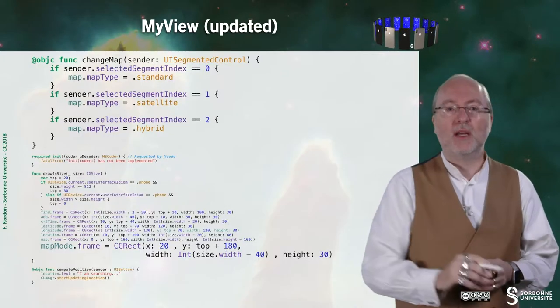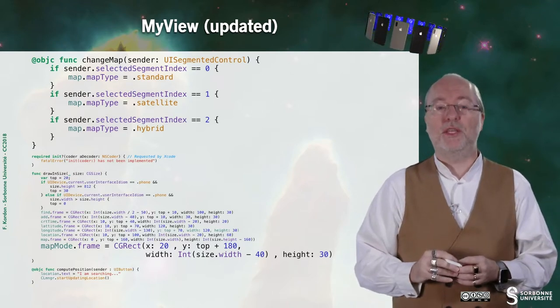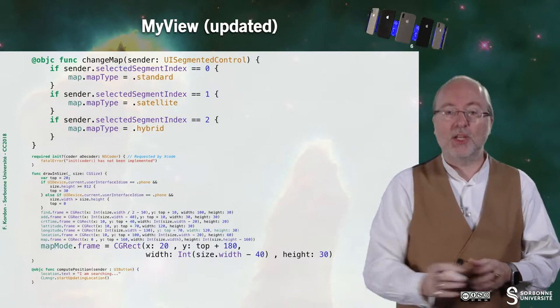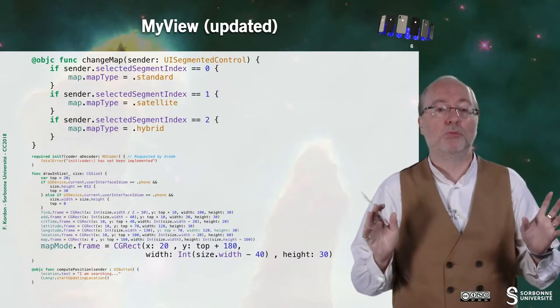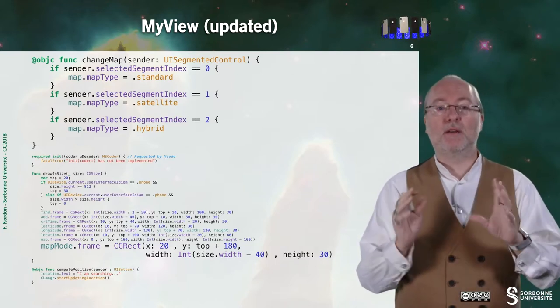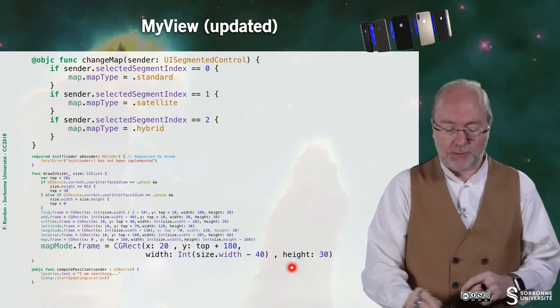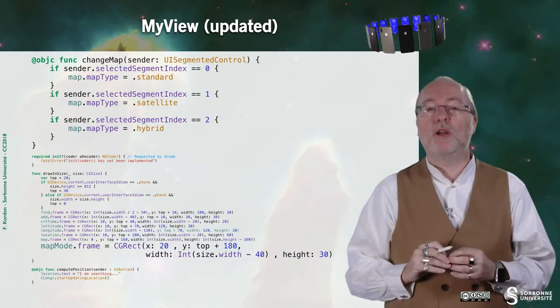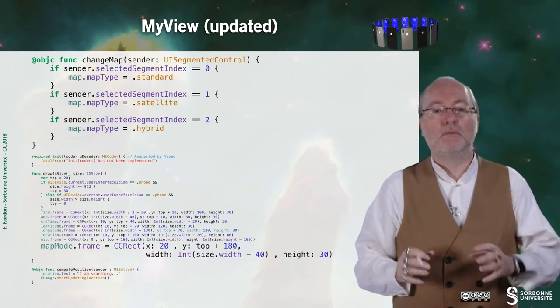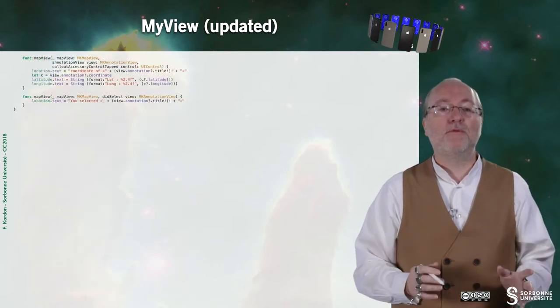Associated to this UISegmentedControl, you have a function that, according to the changes performed on the map, will just change the mapType attribute. And of course, in the drawRect method, you have to set up this UISegmentedControl at an appropriate position. That's all — no more changes from the previous example.